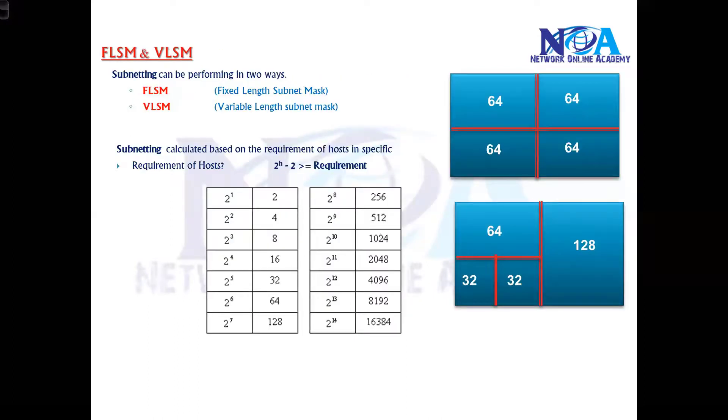Based on this example, let's say my requirement is 30 hosts. We have to go with the requirement of 2 to the power of h minus 2 greater than or equal to 30, which means 2 to the power of h is the nearest power of 2 value which satisfies my condition. Similarly, if my requirement is 60 hosts, I have to go with 2 to the power of 6.